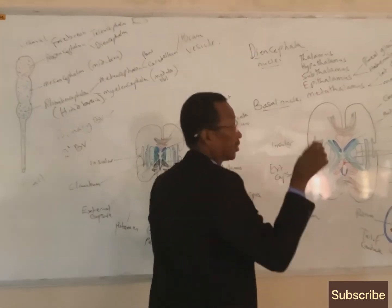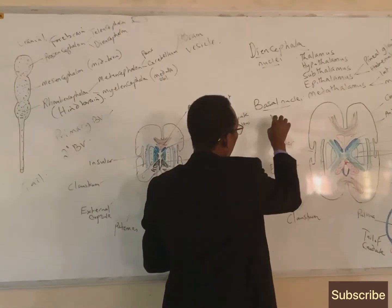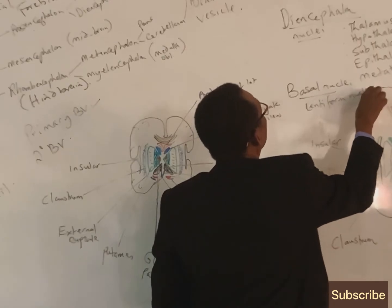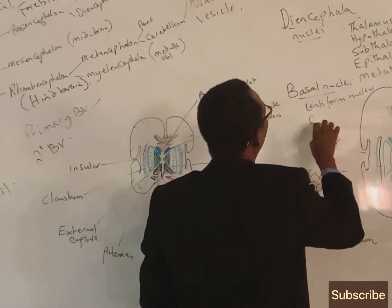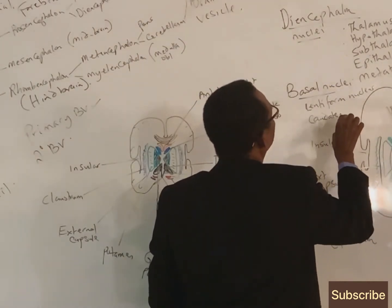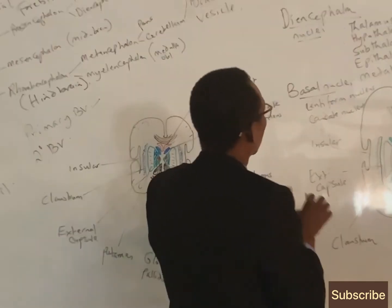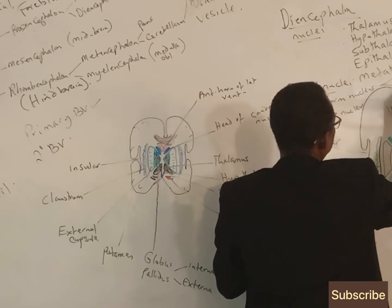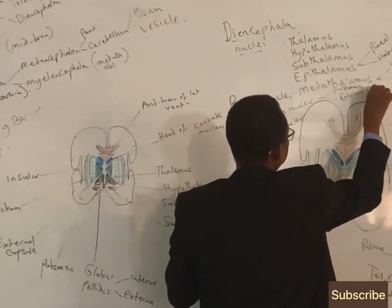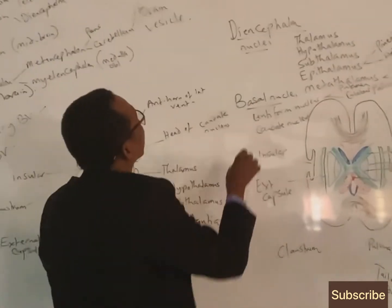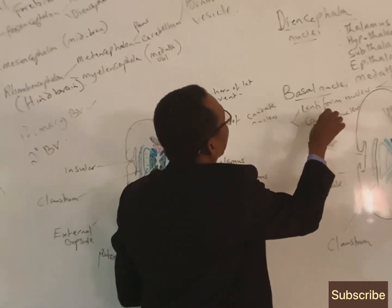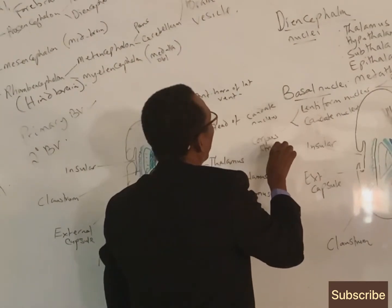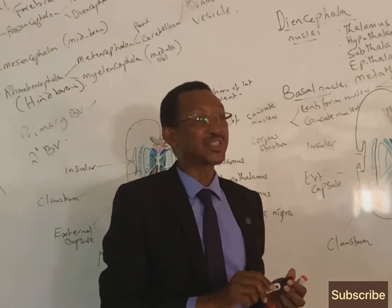The basal nuclei consist of groups of nuclei within the cerebral hemisphere, including the lentiform nucleus and the caudate nucleus. The lentiform nucleus includes the putamen and the globus pallidus. Together, the lentiform nucleus and the caudate nucleus are also called the corpus striatum.